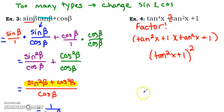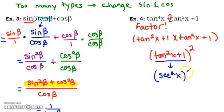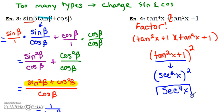Going back to the Pythagorean identities, tangent squared x plus one equals secant squared x. So we have secant squared x, quantity squared, which simplifies to secant to the fourth of x. And then we're done. There are more examples on the next page and another video for you to watch.